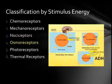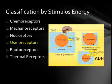Osmoreceptors detect the osmotic pressures within the body. Osmoreceptors in the hypothalamus are responsible for detecting body fluid osmotic pressure and assist in the proper control of hydration in the body.